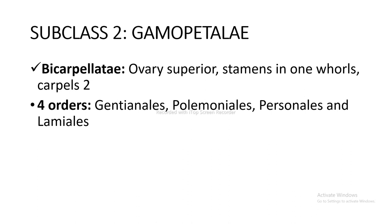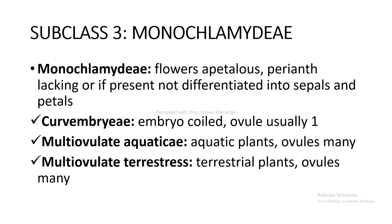Bicarpellatae: ovary superior, stamens in one whorl, carpels two; four orders are Gentianales, Polemoniales, Personales, and Lamiales. Subclass 3 is Monochlamydeae: flowers apetalous, perianth lacking or if present not differentiated into sepals and petals. Series include: Curvembryae (embryo coiled, ovule usually one), Multiovulatae Aquaticae (aquatic plants, ovules many), Multiovulatae Terrestres (terrestrial plants, ovules many), Microembryae (embryo minute), Daphnales (carpel one, ovule one), Achlamydosporiae (ovary inferior, unilocular), Unisexuales (flowers unisexual), and Ordines Anomali (relationship uncertain).